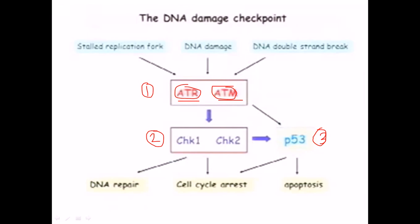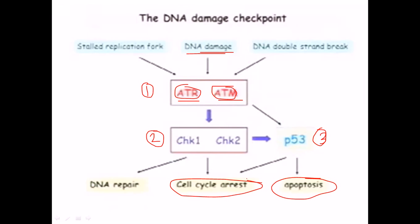Suppose a DNA is damaged. ATM senses that damage and passes the signal to checkpoint kinase proteins CHK1 or CHK2. CHK1 or CHK2 then produce the response protein p53. This p53 protein starts to do different work: it can take the cell through apoptosis — programmed cell death — so the cell eventually dies. It can also go through cell cycle arrest, blocking the cell cycle from proceeding further and arresting the cell cycle.